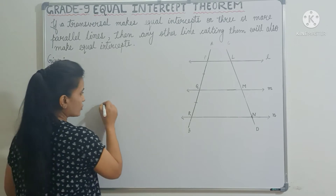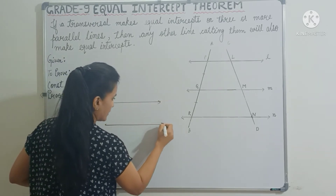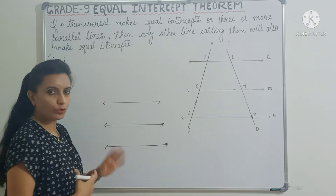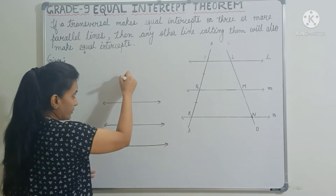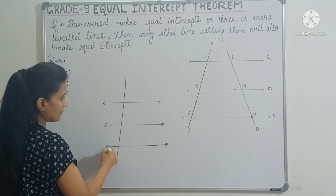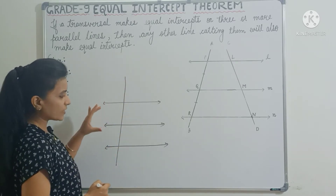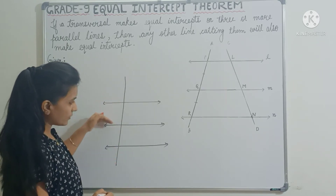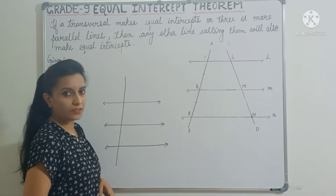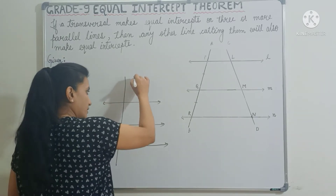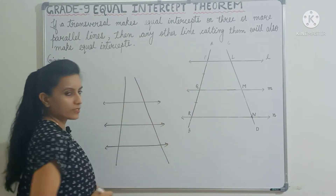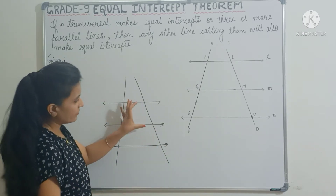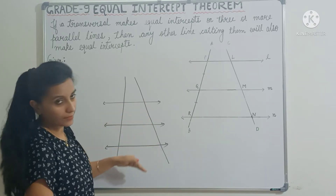So let's say there are three parallel lines — or it could be more than three. If there is a transversal making equal intercepts on these three parallel lines, then any other transversal will also make equal intercepts on these three parallel lines.